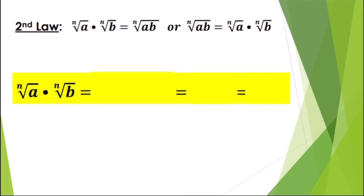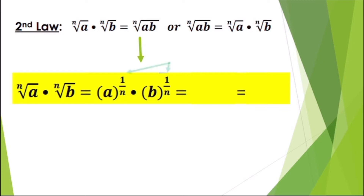For the second law, we have: n-th root of a times n-th root of b equals the n-th root of ab. For the derivation, n-th root of a times n-th root of b equals a raised to one over n times b raised to one over n. Since they have the same exponent, we multiply the bases and copy the exponent, giving ab raised to one over n, which in radical form is the n-th root of ab.